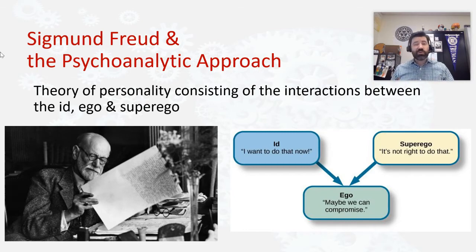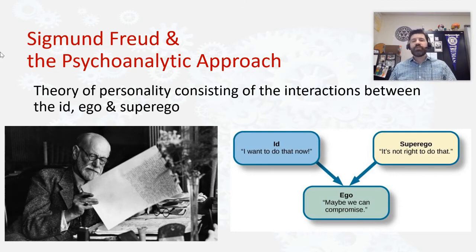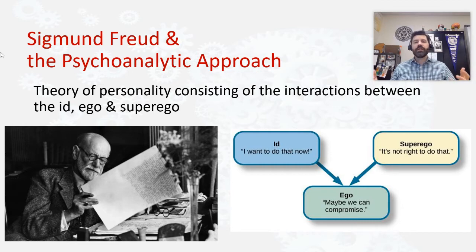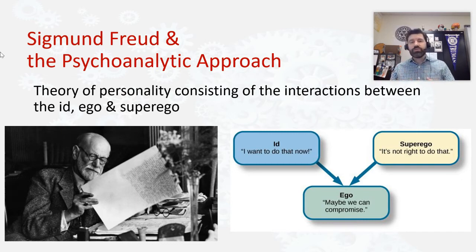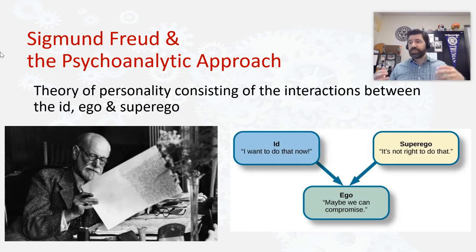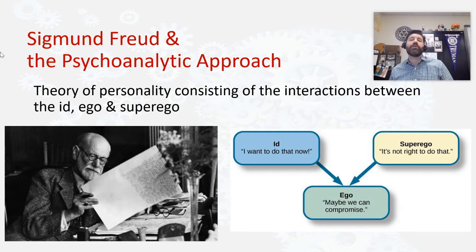Around four, five, or six years old, we start to develop a voice in our head — what we sometimes refer to as our conscience — telling us how we ought to behave, the things we should be doing. Freud refers to that as our superego: this is how you ought to behave, this is what you should do. And then in between the id and the superego is the ego, which translates to 'self.' The ego tries to find a balance between satisfying the impulses of the id, but doing so in a socially acceptable way as defined by the superego.